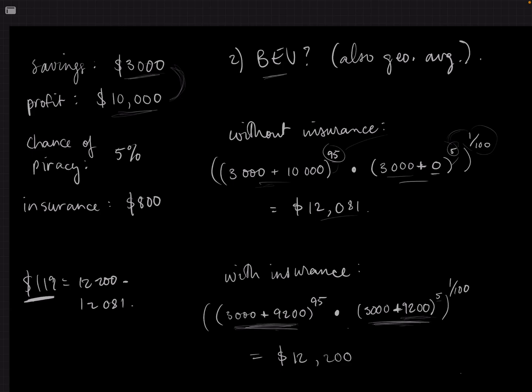If I understand correctly, the insurance is actually worth $919 to you. The point at which the two Bernoulli expected values become equal is the maximum cost of insurance you should be willing to spend, because that is what makes the difference between the two negligible. I'm curious — I want to verify whether the insurance is truly worth $919.